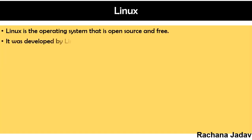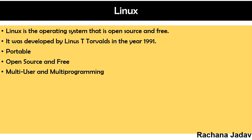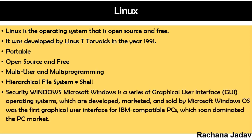Linux is an open-source and free operating system. It is open source because if you know programming, you can make changes to it. It was developed by Linus Torvalds in 1991. Linux is portable, open source, and free. It supports multi-user and multi-programming, has a hierarchical file system, and provides good security.